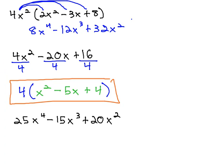Let's try another example. In this second example, 25x⁴ - 15x³ + 20x², we're looking for what we can divide each term by. We see they're all divisible by 5, but they also all have a variable in common of x.